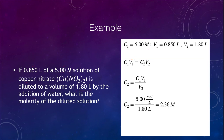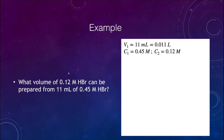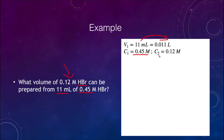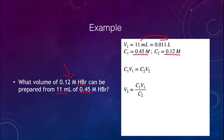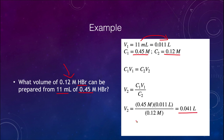Let's look at one more dilution example. We want to find the volume of a 0.12 molar hydrobromic acid solution that can be prepared from 11 milliliters of a 0.45 molar solution. We know V1 = 0.011 liters, C1 = 0.45 molar, and C2 = 0.12 molar. We solve for V2 using our equation, and find that we can make 0.041 liters of the diluted 0.12 molar solution from the 11 milliliters of more concentrated solution.